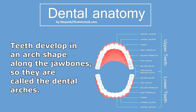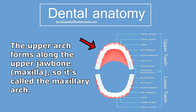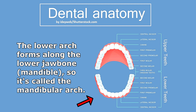Now your teeth will develop along the upper and lower jaw bones in the shape of an arch, so they are referred to as your dental arches. You have an upper dental arch in the maxilla or upper jaw bone, which is called the maxillary arch, and you also have a lower dental arch along your mandible or lower jaw bone, which is called your mandibular arch. If you were to have all your teeth gold plated, then you'd have two golden arches, just like McDonald's.